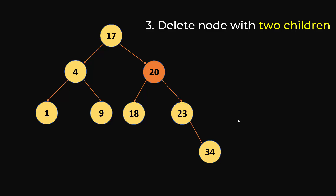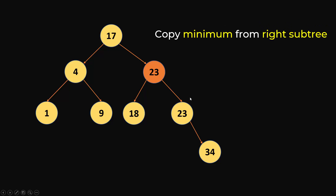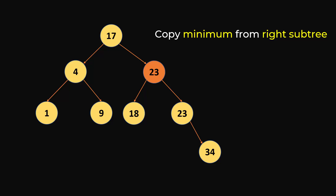So you have to be very careful when you try to delete a node like 20. One approach is to look into your right subtree — which is 23 and 34 — and find the minimum value from that right subtree, then copy that minimum value to the current node. Since the minimum of 23 and 34 is 23, you copy 23 here. Once you copy it, you remove the duplicate, so you remove the original 23.